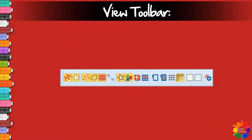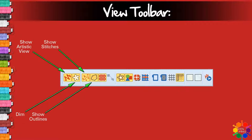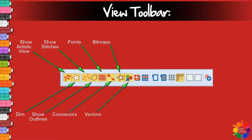The view toolbar: Show artistic view, Dim, Show stitches, Show outlines, Points, Connectors, Bitmaps, Vectors.